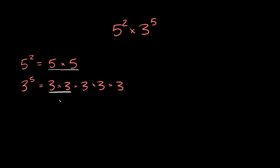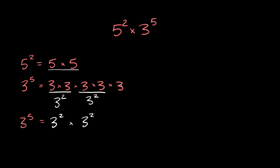3 times 3, I could rewrite that as 3 squared. Look, we have the same exponent. And since we have a bunch of 3s over here, we could do it again. Take another pair of 3s and group those together, and write that as 3 squared. Again, we have the same exponent. And then we just have this extra 3 all by itself. So let's rewrite 3 to the 5th using these exponents: 3 to the 5th is the same thing as 3 squared times 3 squared times 3.